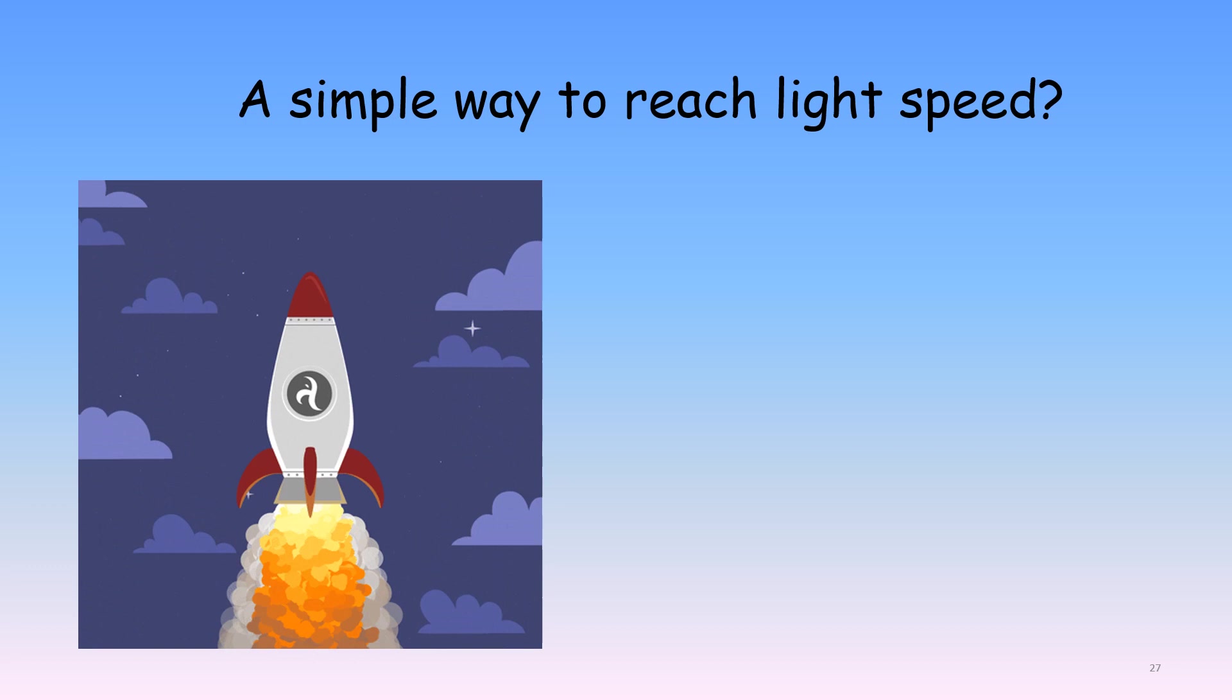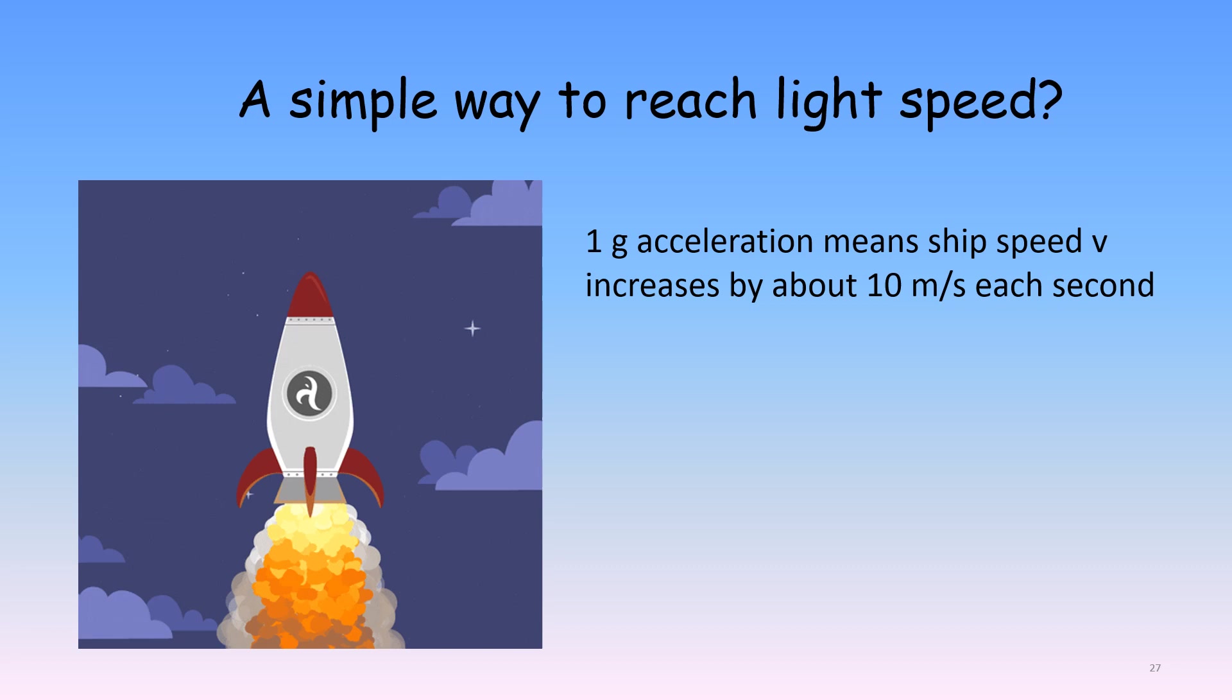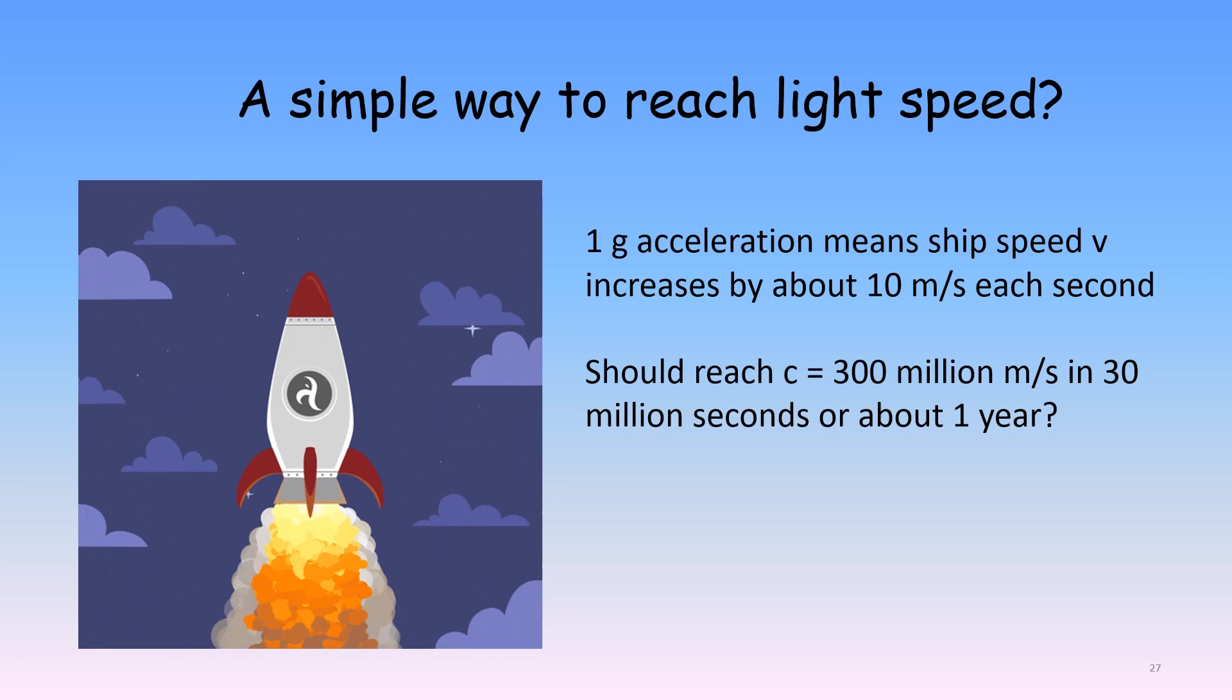The idea of the speed of light being a universal speed limit for a moving object really does seem kind of crazy. Here, for example, is a simple way you might imagine you could reach or exceed the speed of light. Suppose you're in a spaceship which accelerated at 1 g. With that acceleration, your speed would increase at a rate of about 10 meters per second every second, and you'd feel like you were back on Earth and not floating around. As the seconds passed, your speed after 1, 2, and 3 seconds would be 10, 20, and then 30 meters per second. With that rate of increase, you'd think that you could reach light speed, about 300 million meters per second, in a time of 30 million seconds. That works out to be just about a year.